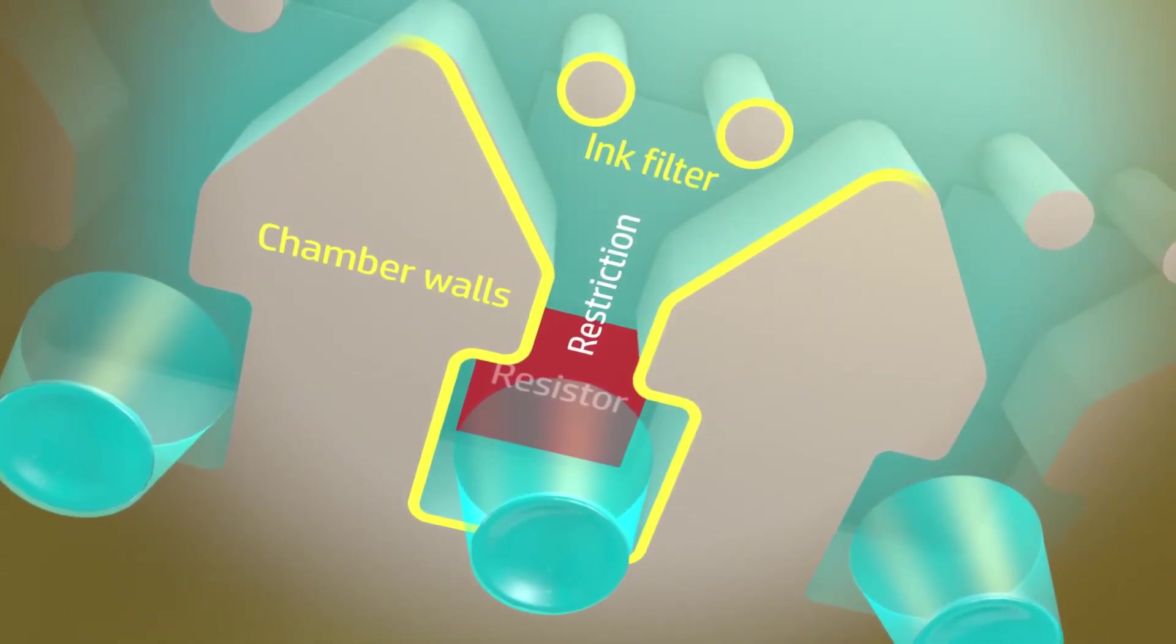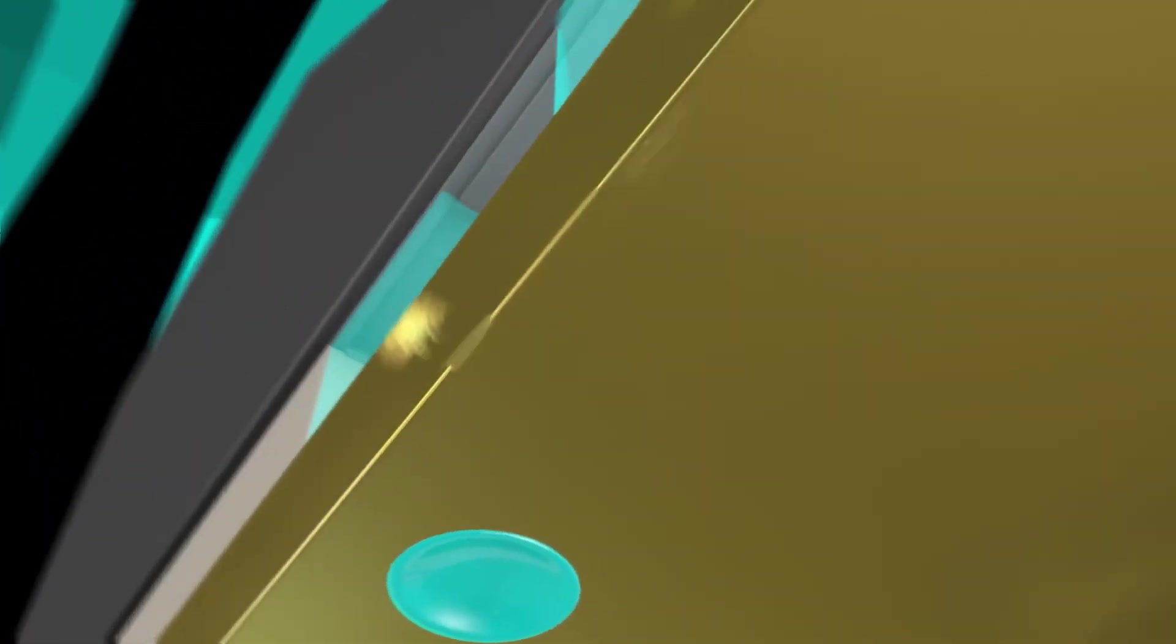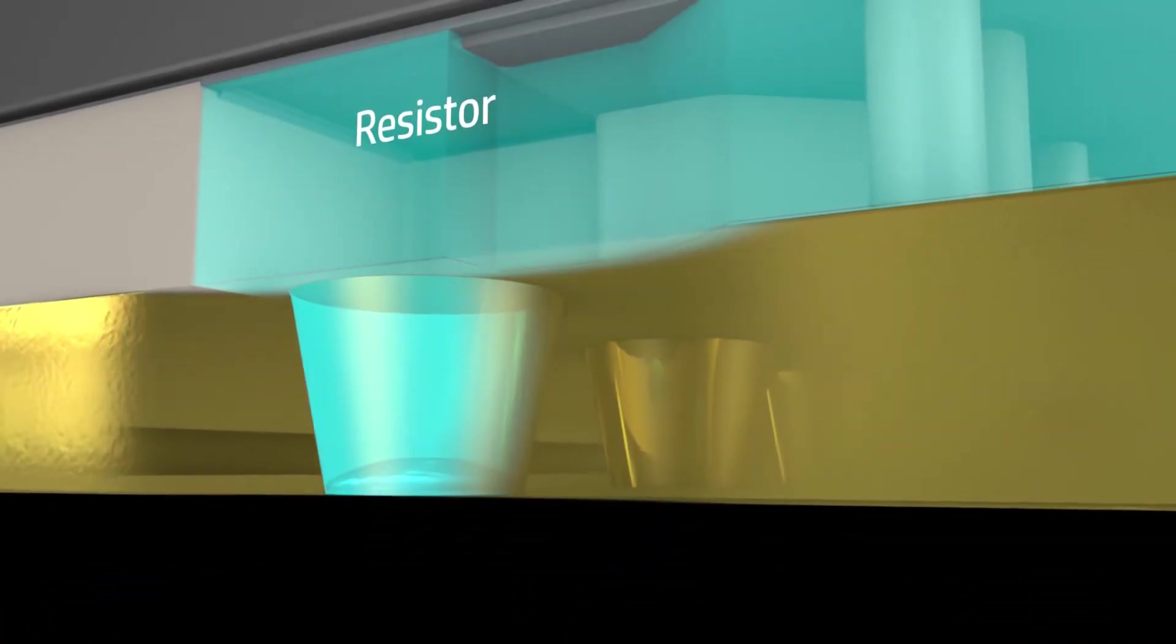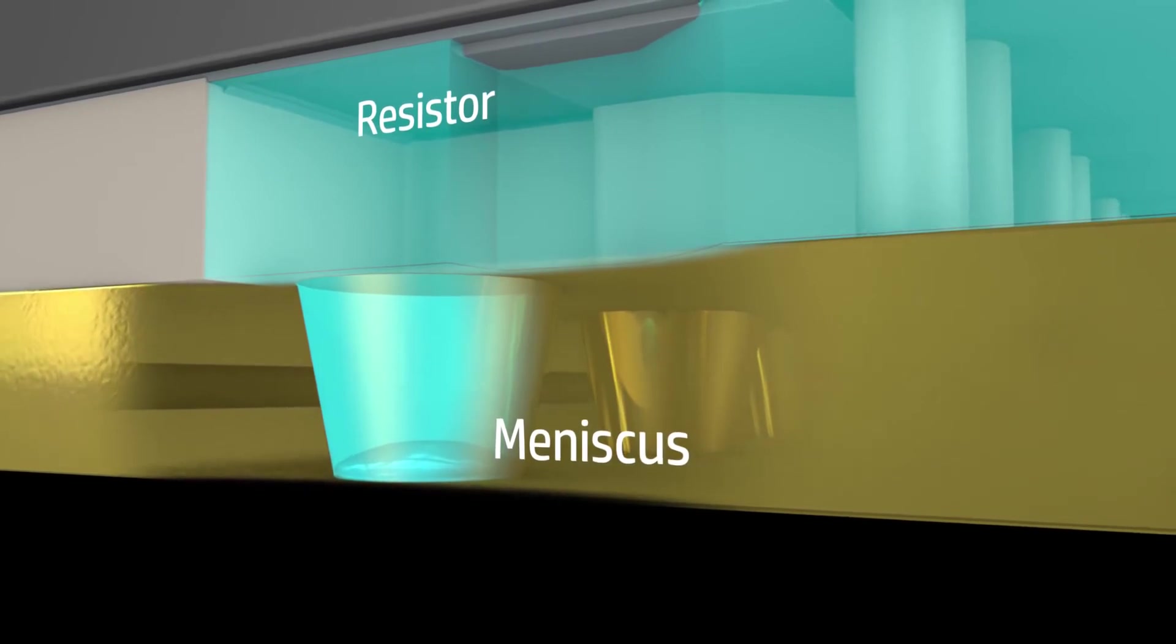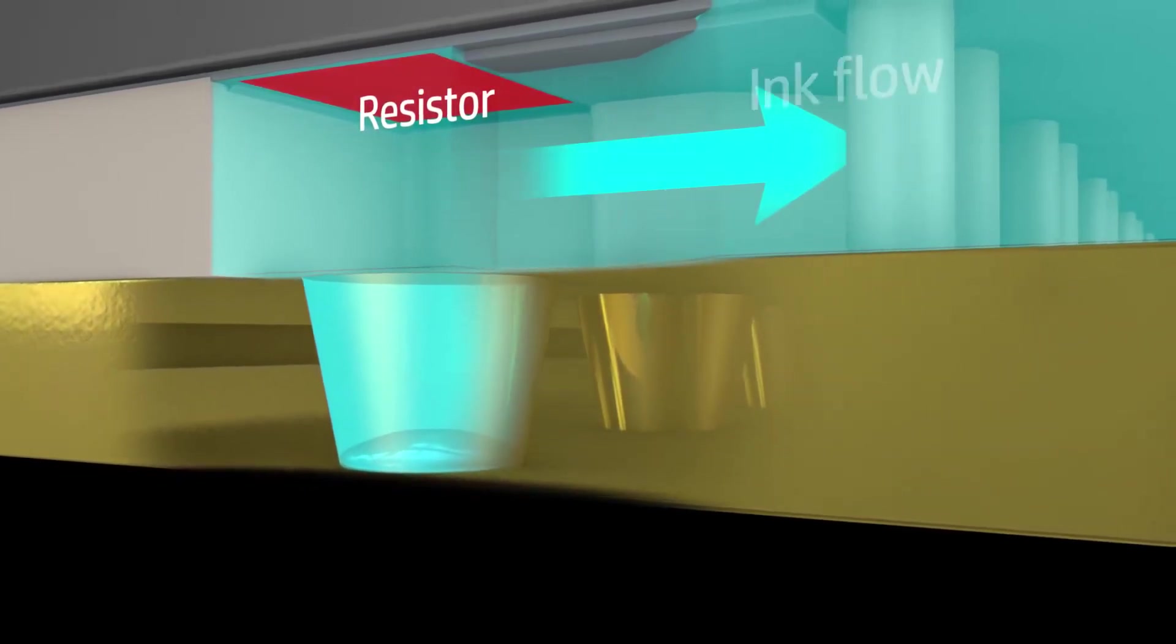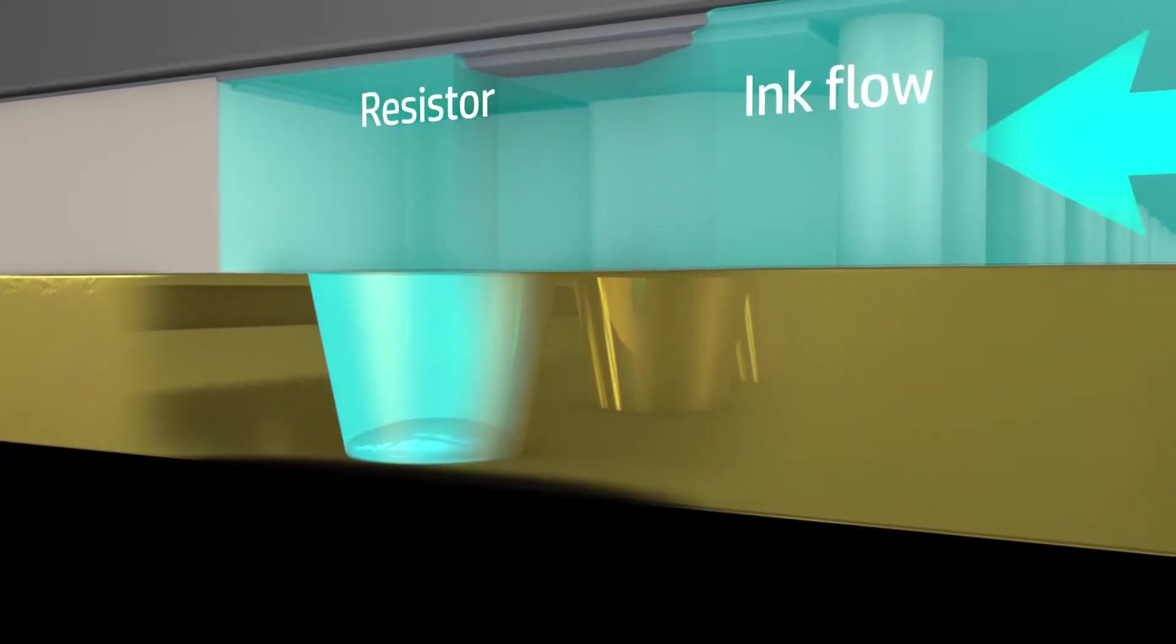Two pillars prevent particles from clogging the chamber and nozzle. The nozzle is filled with ink and the meniscus is the surface where the ink meets the air. A human hair is thicker than the chamber and nozzle together.